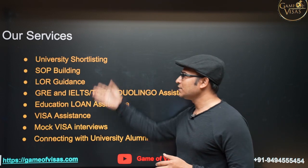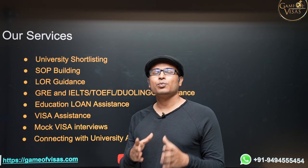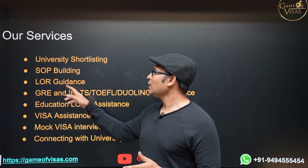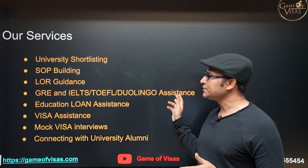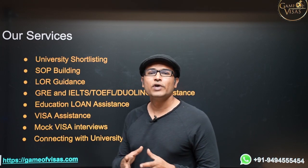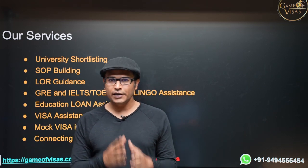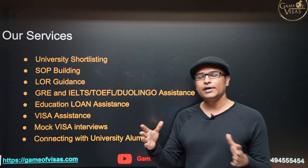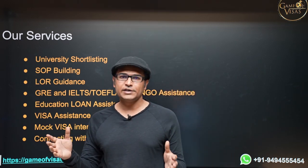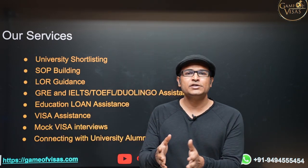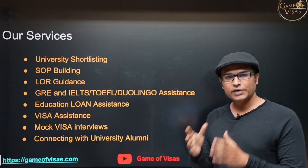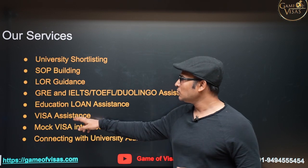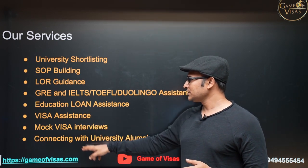And these are all the services that we provide: university shortlisting depending on your profile, statement of purpose building, LOR guidance, GRE and English test assistance, and education loan assistance. You don't have to have any collateral, which means without any security you can get education loan. Getting education loan is very simple these days. Whatever the amount of fee that you have, you have a range of universities you can apply for: 10 lakh universities, 20 lakh universities, or 50 lakh universities. Whatever it is, you are going to get complete education loan and you can pay off your education loan in one year after you get a job.